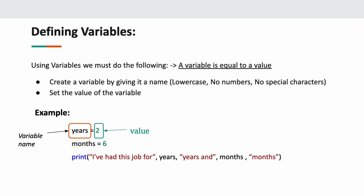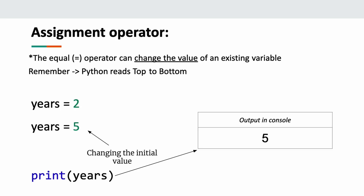We can use those variables to print things or do things with. If I print off 'I've had this job for years and months', it's going to say 'I've had this job for two years and six months.' Just remember that variables we're going to name with lowercase, no numbers, no special characters. A variable is just a word that holds a value, and this value can be any type of data. Also remember that you can use a variable again later — if you change it, the output reflects the new value, not the original.